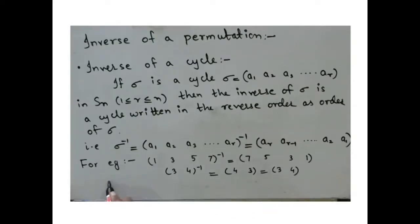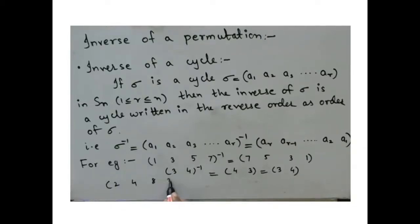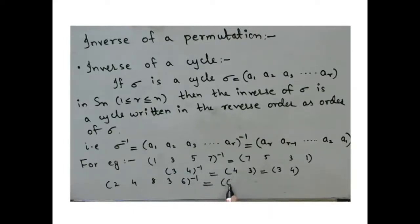Let me take one more example. The inverse of the cycle (2, 4, 8, 3, 6) will be (6, 3, 8, 4, 2).